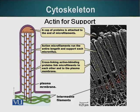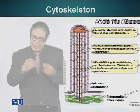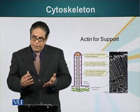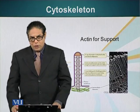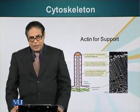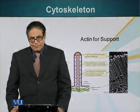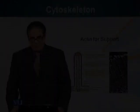Actin filaments also give structural support to small finger-like projections called microvilli, which are present in different parts of the body. This actin support is necessary for these projections to maintain their shape. Next we will talk about microtubules and intermediate filaments.